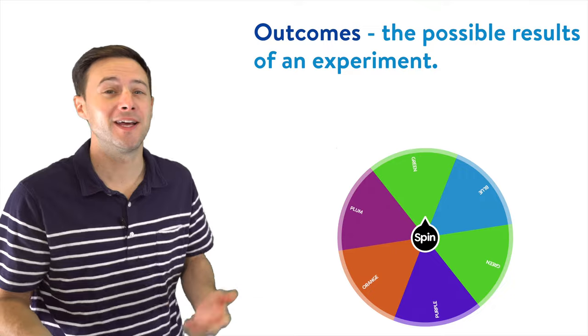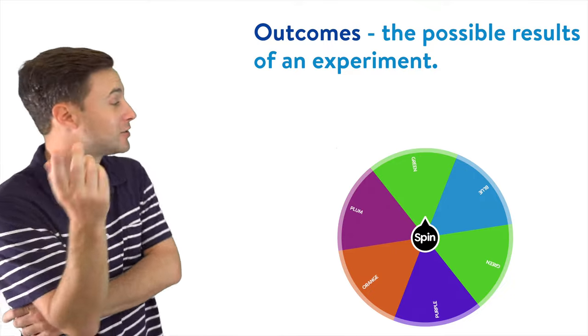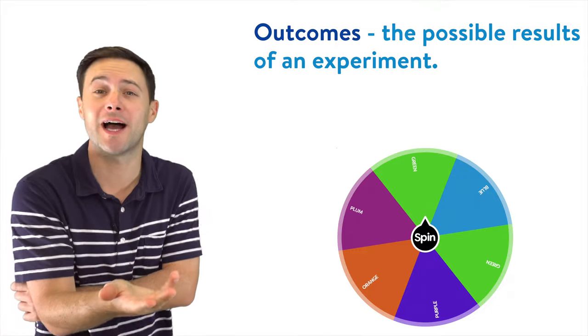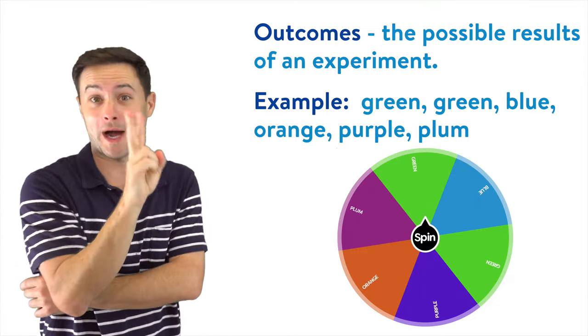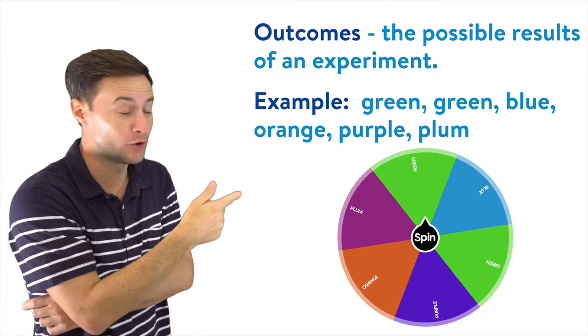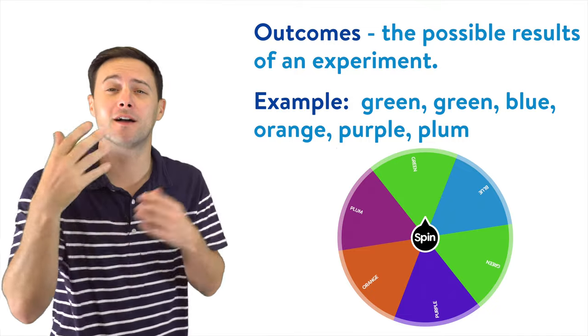The next term we're going to talk about are outcomes. An outcome is simple, it's just the possible results of an experiment. So if we look at our spinner, what are the outcomes? It could land on green twice, there's two greens. It could land on a blue, an orange, a purple, or a plum. Those are our outcomes.